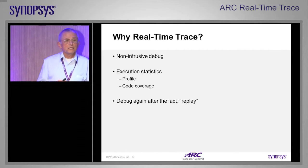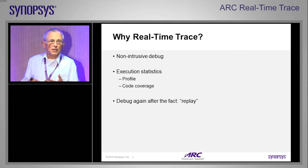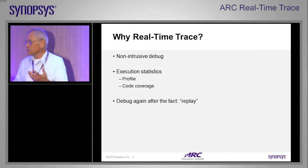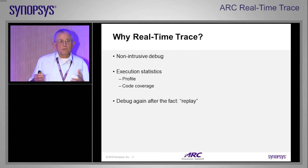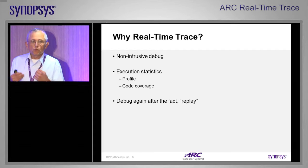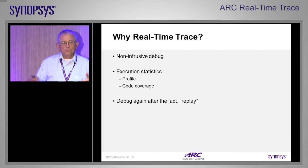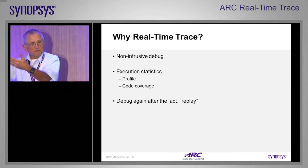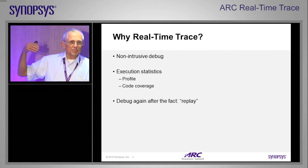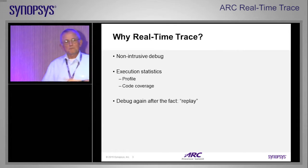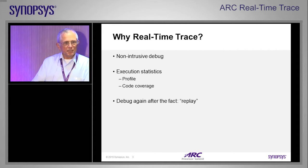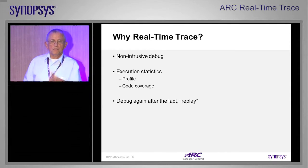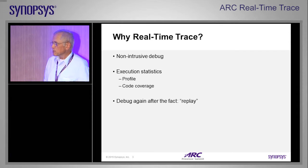Once you have trace, you can get execution statistics. You can find out where you're spending your time, get a profile, and use those statistics to get code coverage — what statements of your program were you executing, and what were you not executing? One interesting use is something I call replay, which is taking the gathered trace and using it to reconstruct the execution session of your program, and watch it going forward or backwards in trace. So you can debug without being connected to your target anymore, gather the trace, store it, and later debug it — or even send it to someone thousands of miles away.